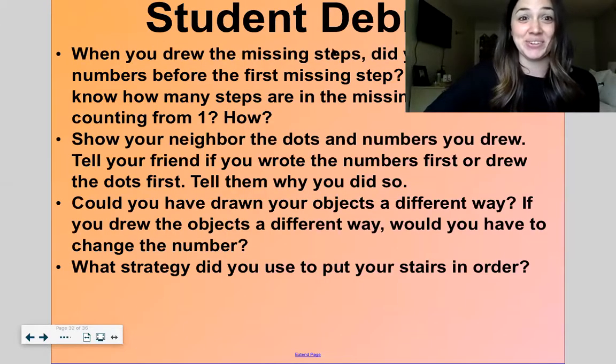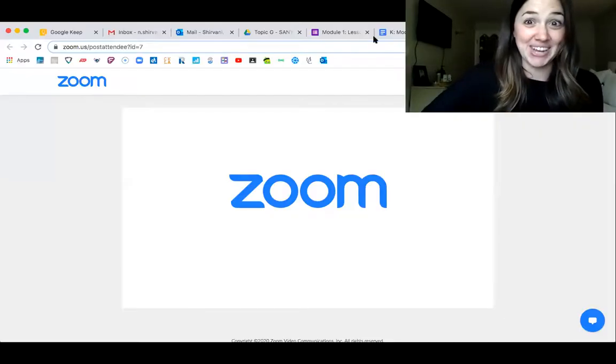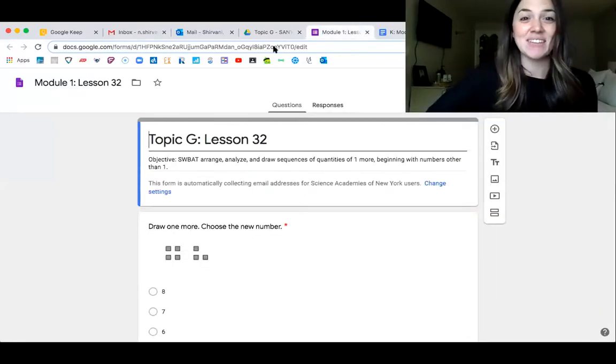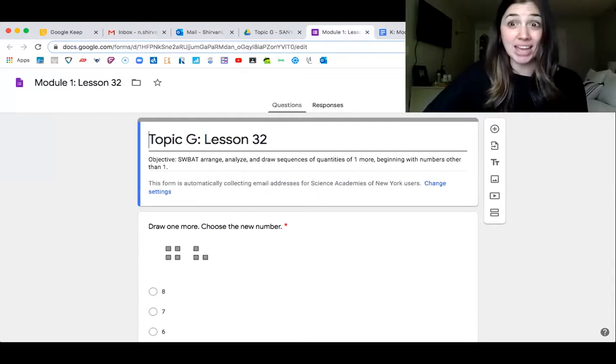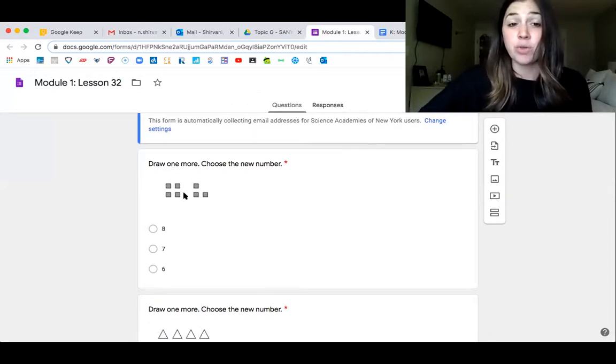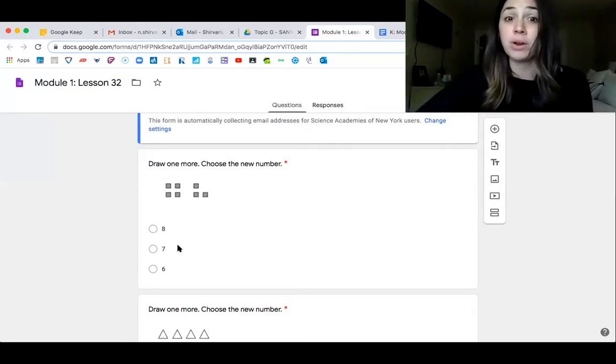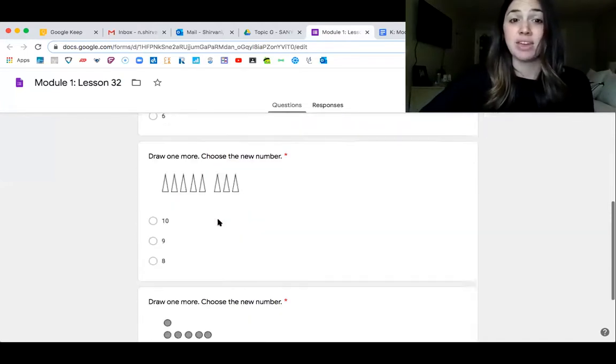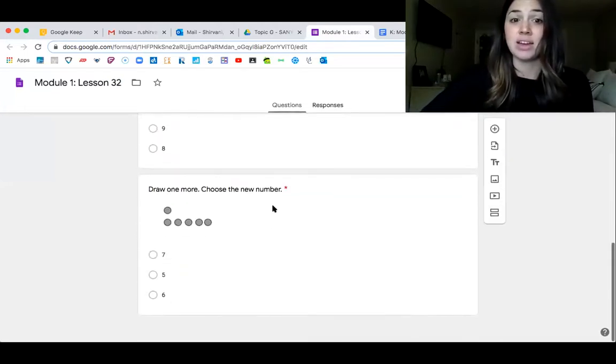Okay. Let me show you your problems for the day or your exit ticket. You guys did a good job with those missing towers. That was funny. You're going to practice the one more way again in your exit ticket here. So you have four, five, six, seven. Draw or think about one more and choose a new number. Same thing here, same thing here, and same thing here.